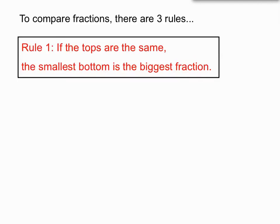Rule one: if the tops of the fractions are the same, then the smallest bottom is actually the biggest fraction. We've got 1/3 and 1/2 here, so the tops are the same. The smallest bottom, in this case the two, is the biggest fraction. It's a strange rule but the half is bigger than 1/3 there. The bottoms work opposite to what you'd expect. Half is a bigger fraction than 1/3.